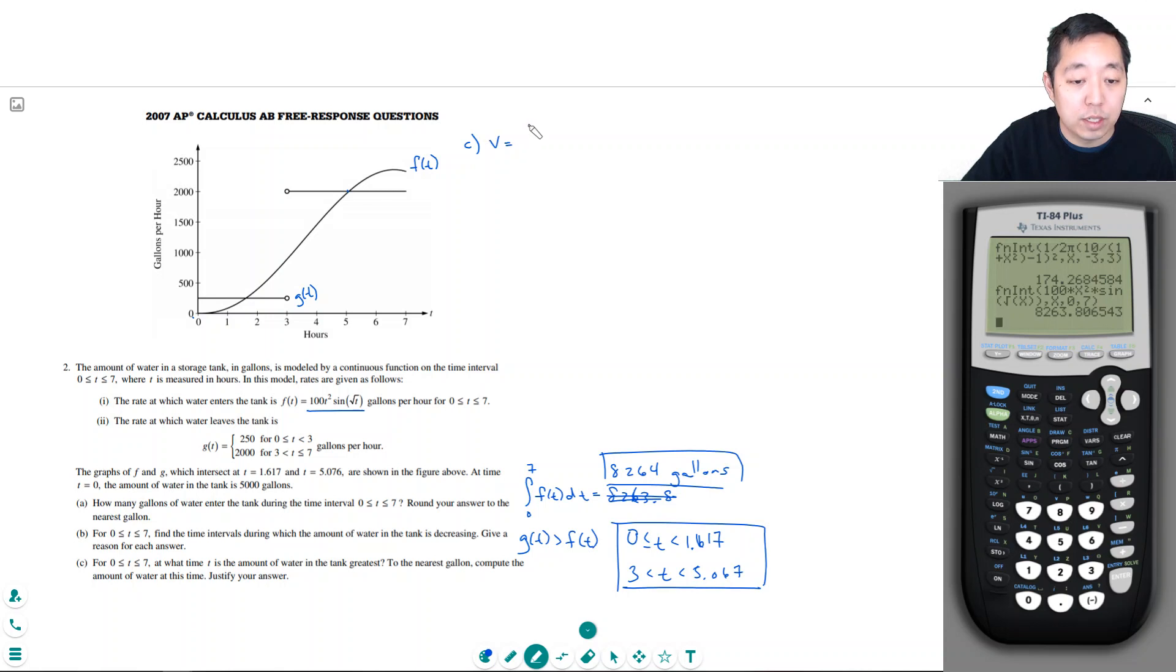Local values, so remember the volume is the integral of f of t minus g of t dt from 0 to x, plus 5,000. This is the integral that would describe the volume as a function of the time x. So when it's maximum is when v prime of x, at least for local maximum, is when 0 or undefined. And the derivative of this is just simply f of t minus g of t is equal to 0 or undefined.